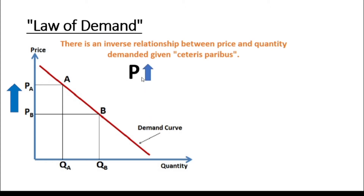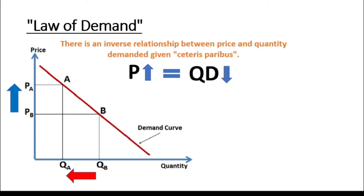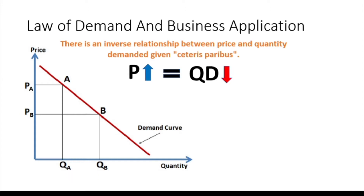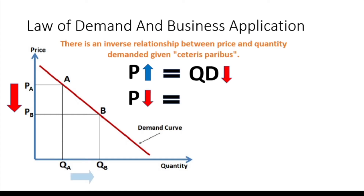As we can see, when the price is up, the quantity demanded for the same product or service is down, and when the price is down, the quantity demanded is up. This makes the demand curve downward sloping.